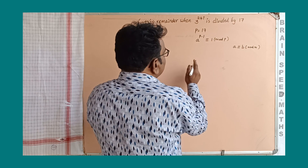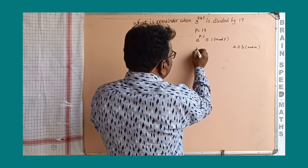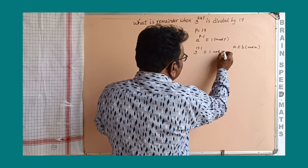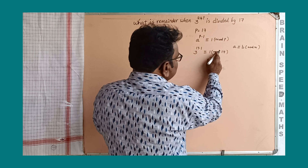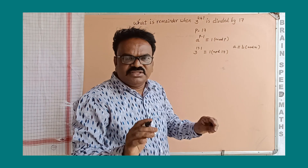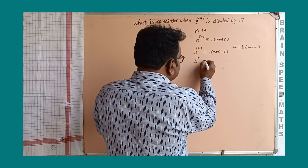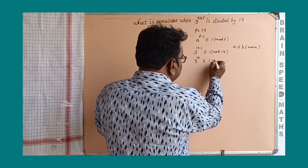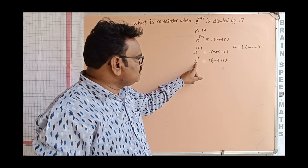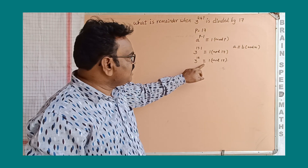Here p is equal to 17 and a means 3. So 3 to the power of 17 minus 1 is congruent to 1 modulo 17. This is Fermat's theorem. So that gives us 3 to the power of 16 is congruent to 1 modulo 17. This means when 3 to the power of 16 is divided by 17, we are getting the remainder 1. We get this from Fermat's theorem.